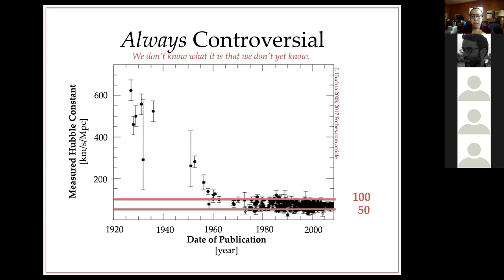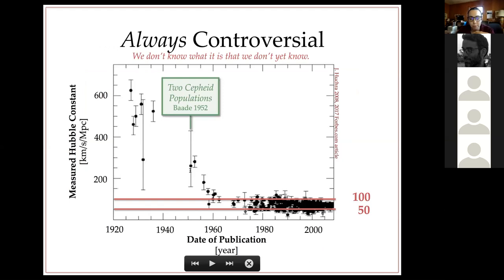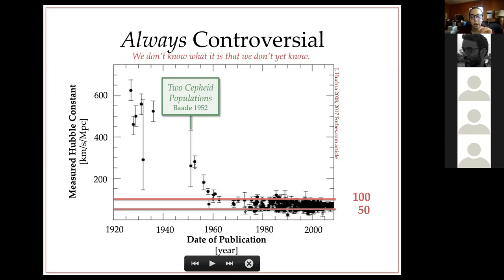From that initial measurement, the value of the Hubble constant has always been controversial. The early numbers were quite large, but they dropped substantially when Walter Baade realized that the Cepheids Hubble was using weren't a single population — there are two types: Cepheids from young stellar populations, which we normally use, and Cepheids from older populations, which must be separated to get reliable distances. That made a huge change in the distance scale overnight.